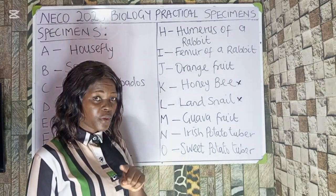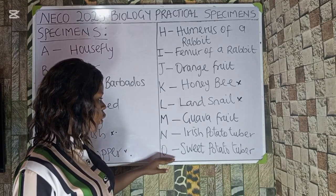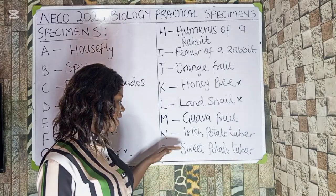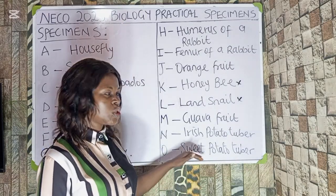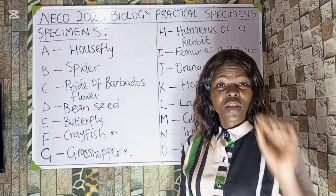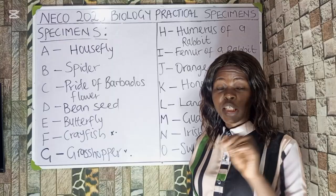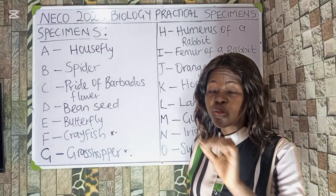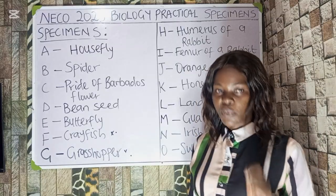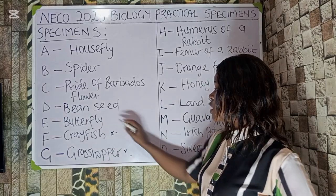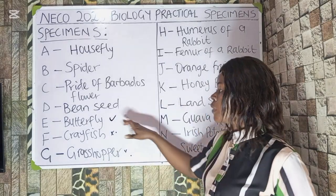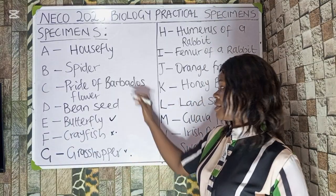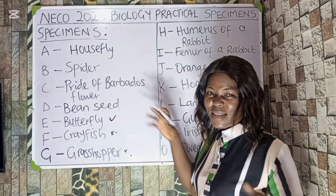Specimen N is Irish potato and Specimen O is sweet potato tuber. You may be asked to state the similarities between them. All the insects listed among the specimens belong to the phylum Arthropoda — in case you are asked. Specimen E and K — butterfly and honeybee — are agents of pollination because they pollinate the Pride of Barbados flower. You can see the relationship between these different specimens.